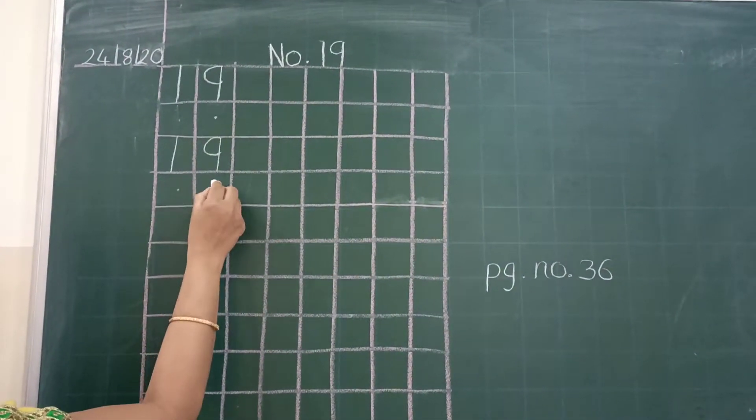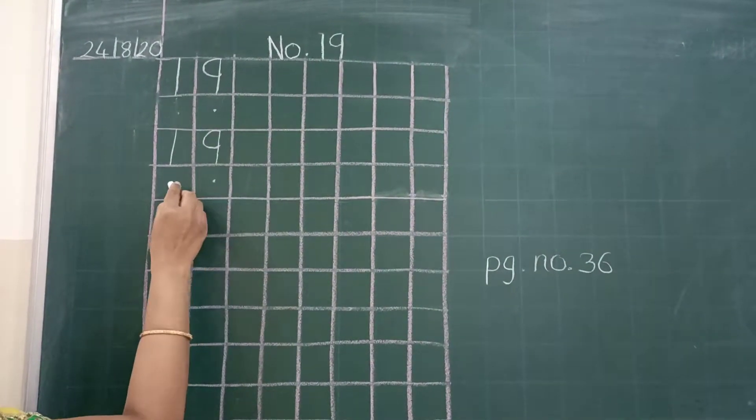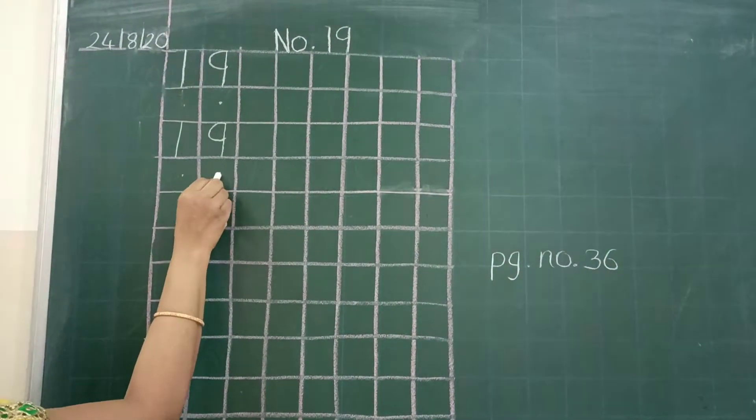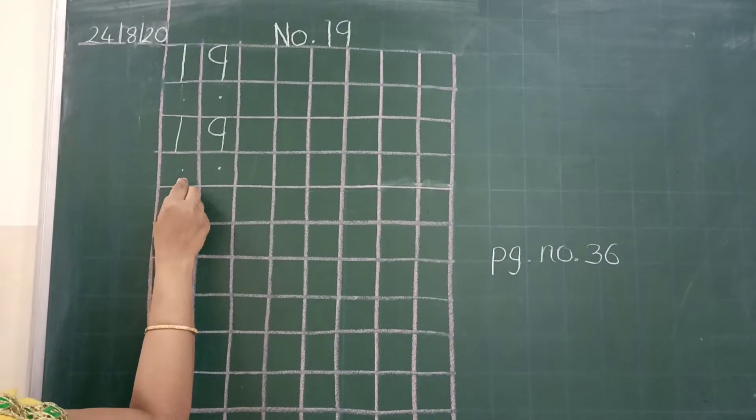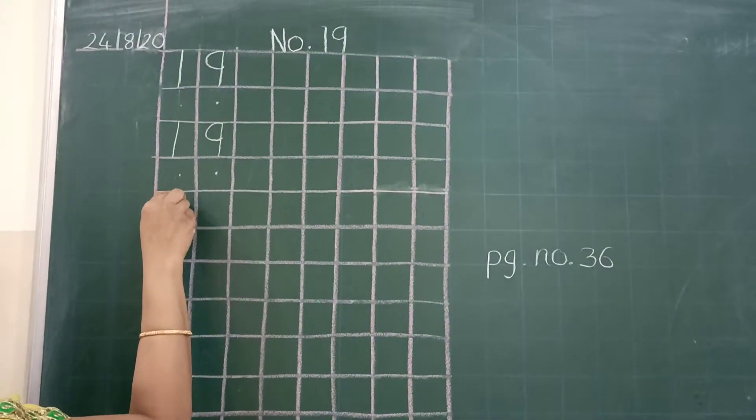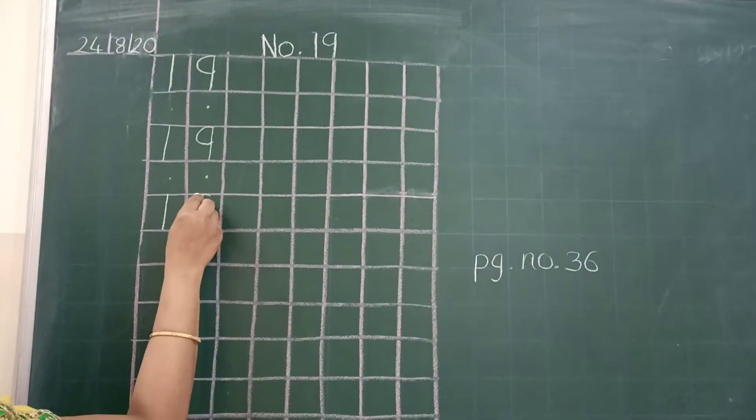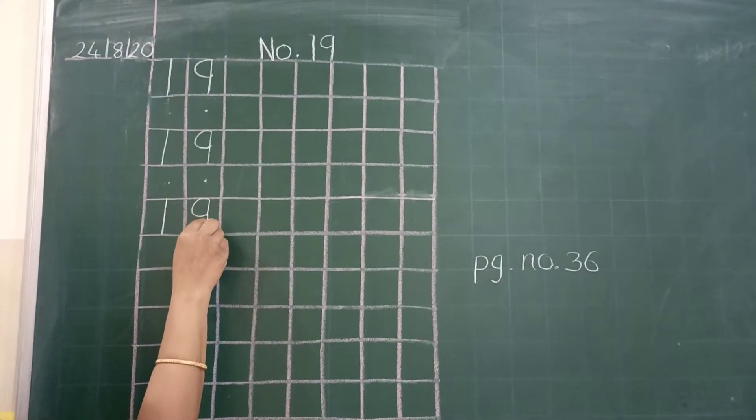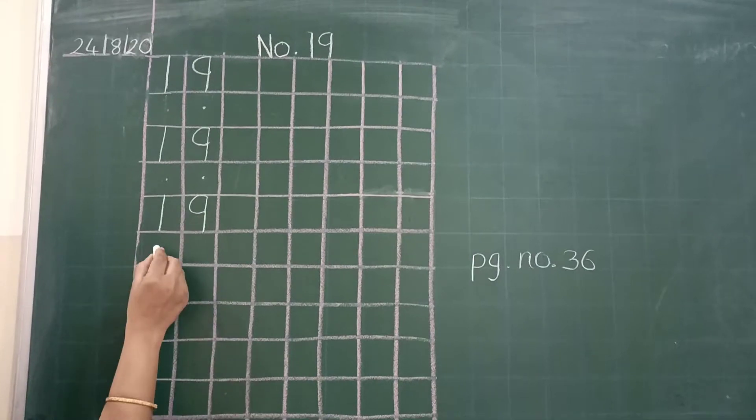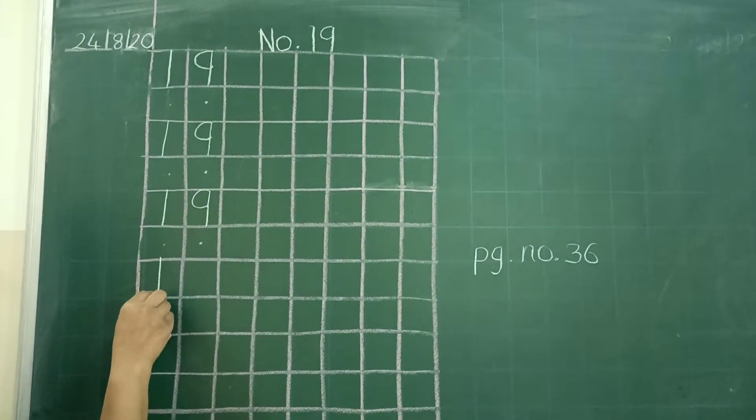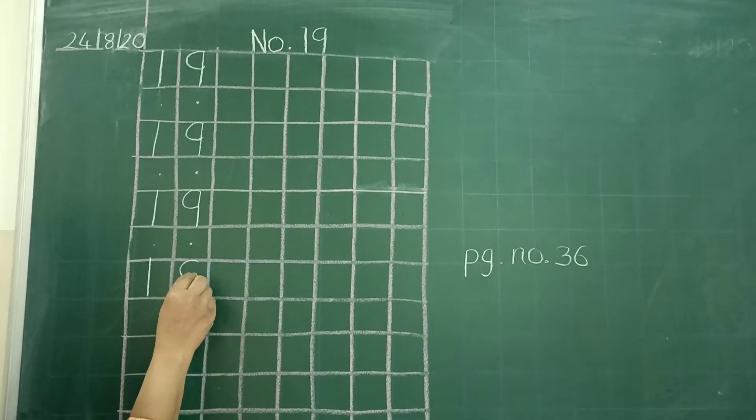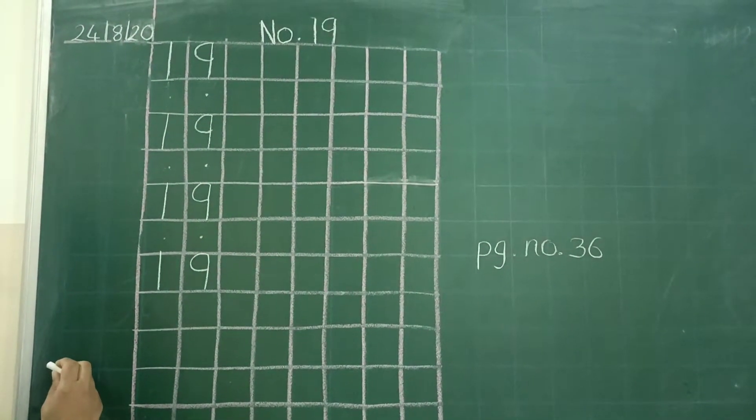I saw some homeworks. They are not leaving these 2 boxes. If you didn't leave, it will not look good. So you have to leave these 2 boxes and then write 1 and 9, 19.